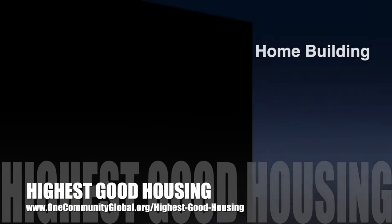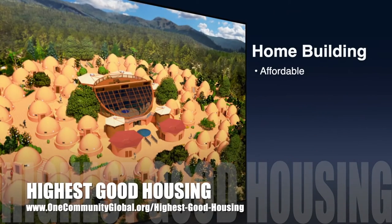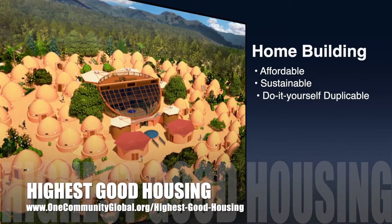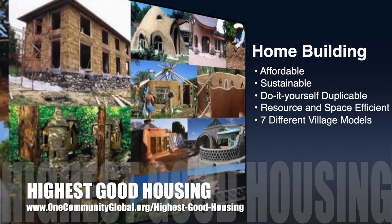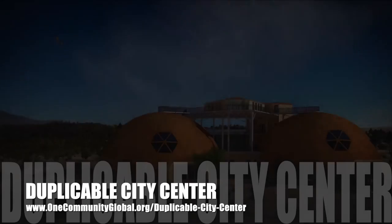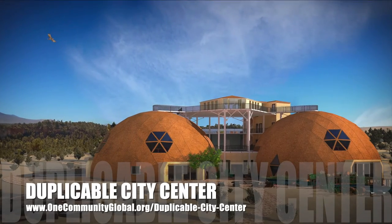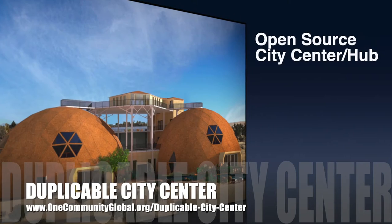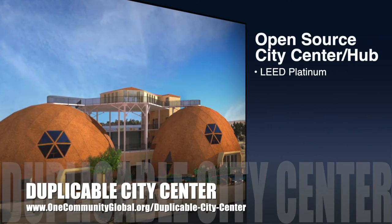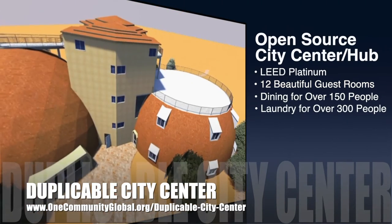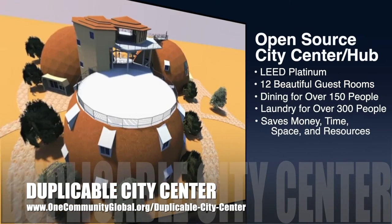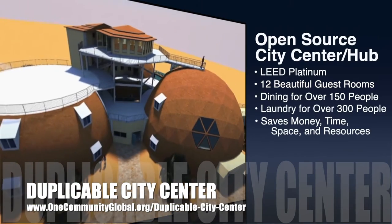One Community's approach to highest good housing is eco-artistic home building that is affordable, sustainable, do-it-yourself duplicable, resource and space efficient, and consists of seven different sustainably constructed village models. One Community is also creating an open source duplicable city center designed to be LEED platinum certified, provide 12 guest rooms, dining for over 150 people, and laundry and recreation space for over 300 people — all while saving money, time, space, and resources.